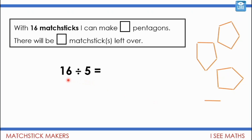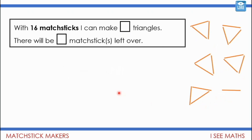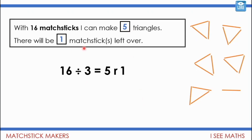This is just the same thinking as 16 divided by 5 — how many fives in 16? Just like asking how many pentagons you can make, and will there be anything left over? The answer is three remainder one. Can you see how that's the same? And with 16 matchsticks, how many triangles? That's the same as 16 divided by 3 — how many threes in 16? Five remainder one, just like making five triangles with one matchstick left over.